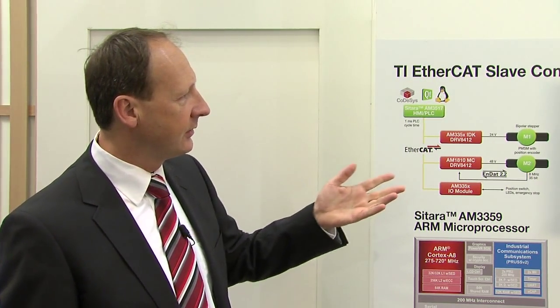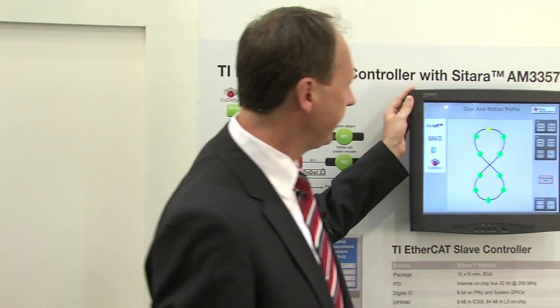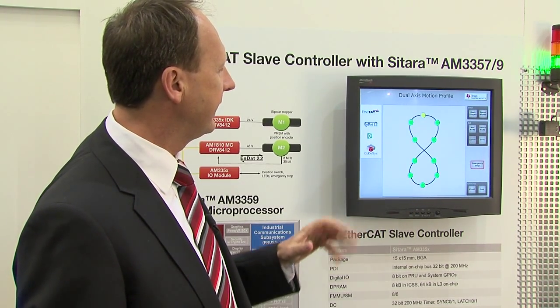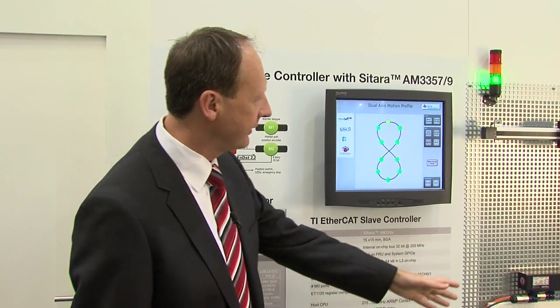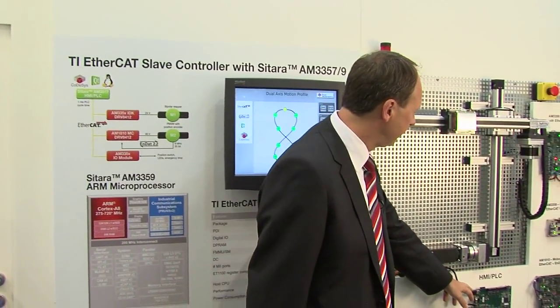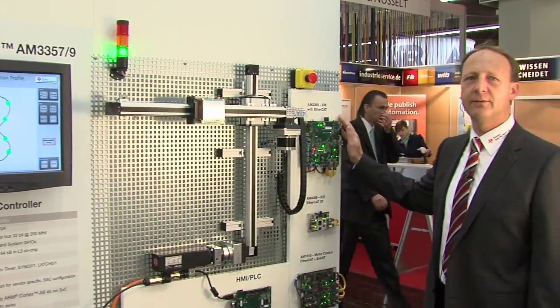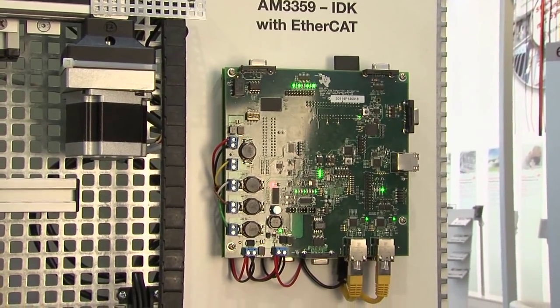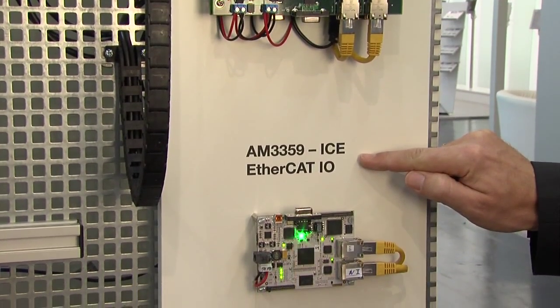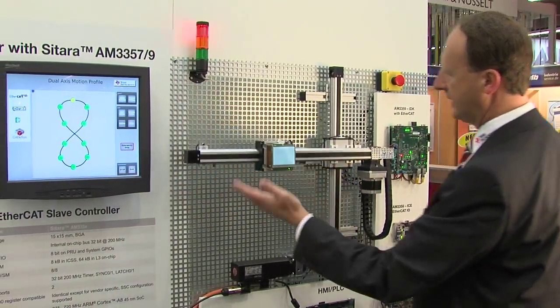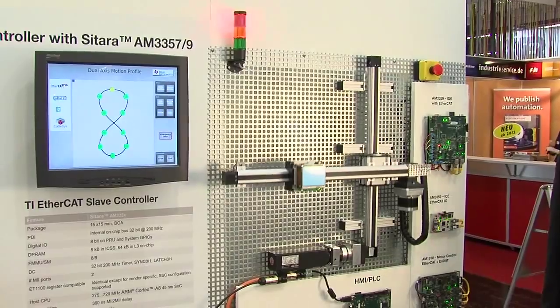An additional module with the AM335X is handling position sensing and driving the lights. Basically, we can have a shape on the screen that is executed on the dual axis driven with our boards — the AM3517 and the AM3359 industrial development kit with the industrial communication engine. When I press the start button, we see this shape executed by the dual axis motor control application.